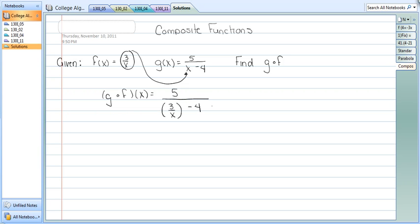Now this is the composite function, but it's not simplified. We have a complex fraction here, a little fraction inside of a big one. So what we're going to do is look for the least common denominator of those secondary fractions. And we only have 1, so the LCD is just x. We're going to multiply the primary fraction, or the big one, top and bottom, by x.